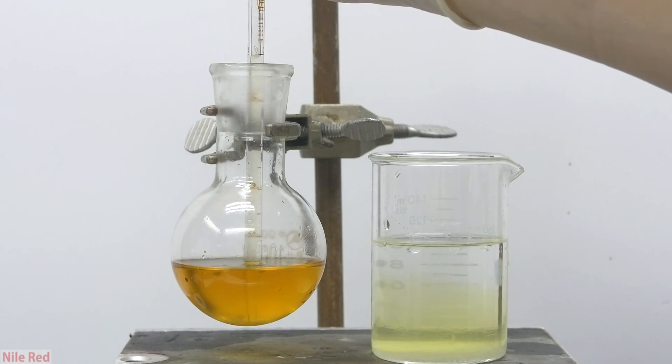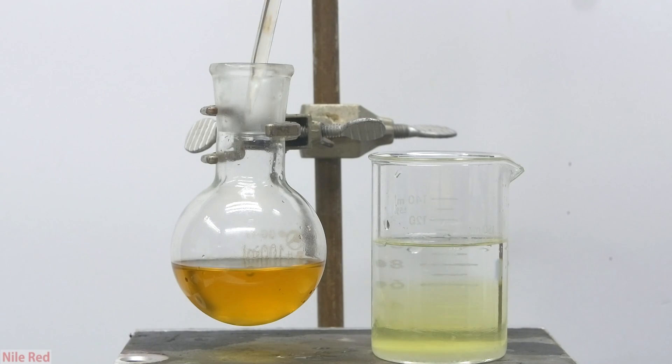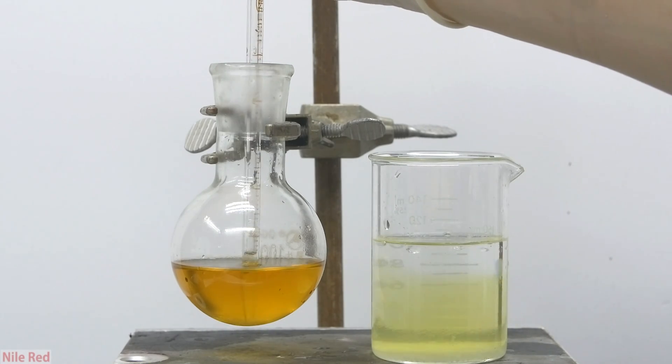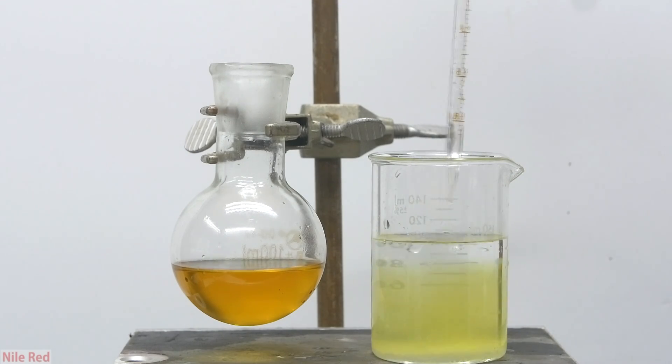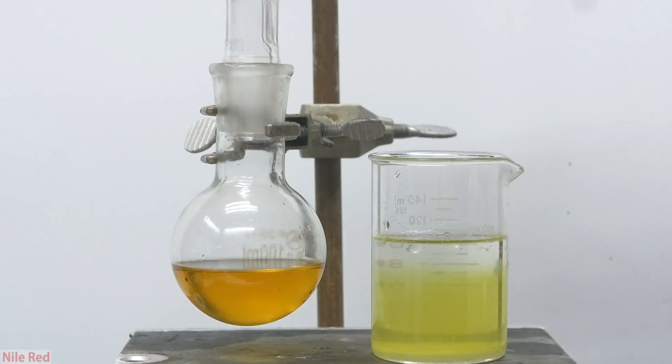Instead of using a separatory funnel, I decided to remove the lower water layer just by using a pipette. All of the water that's removed is heavily contaminated with acrolein, and this is neutralized in the basic solution you see on the right. One very important thing though is to not let the pipette tip touch the sodium hydroxide solution. If the pipette gets some sodium hydroxide on it, and we actually introduce it into the acrolein, it can all start to polymerize.